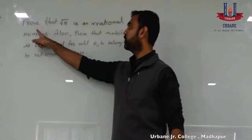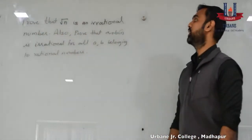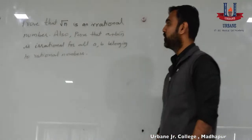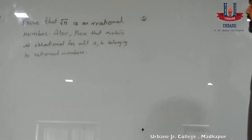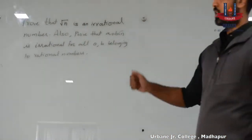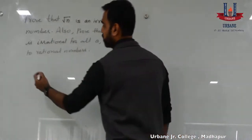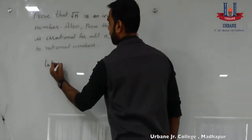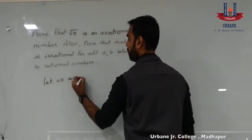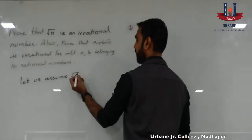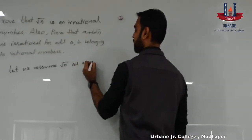Let us solve this question. Prove that square root of n is an irrational number. Also prove that a plus b root n is irrational for all a, b belonging to rational numbers. So, let us start by assuming square root of n as a rational number.